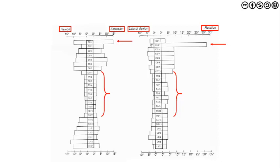The limited thoracic mobility should cause pause when thinking about function and assessment techniques. The sacral segments are fused, so they are not included in motion assessment. The lumbar spine has a fair amount of flexion, not much extension, a bit more lateral flexion, and similar rotation. Notably, L3-4 and L4-5 show the most motion, and pathology in the lumbar spine tends to occur at these lower levels where increased mobility is found.